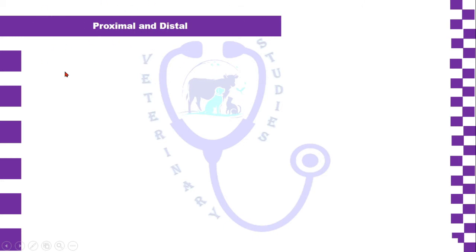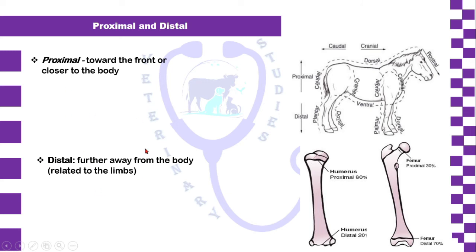Proximal and distal — both terms are related to the limbs of an animal. Proximal means the structure which is present near or toward the body of an animal, whereas distal is opposite to proximal, meaning away from the body. In long bones such as the humerus and femur, there are two extremities: the proximal extremity has a head facing toward the body, and the distal extremity faces away from the body.